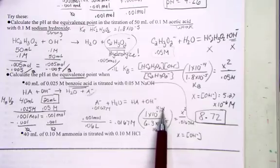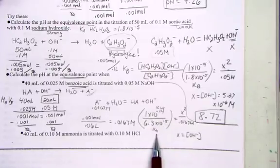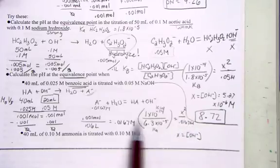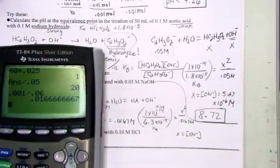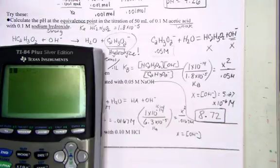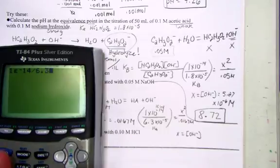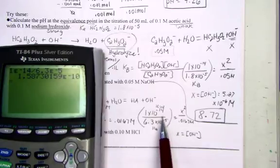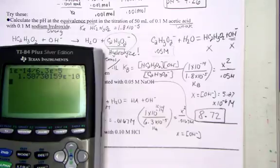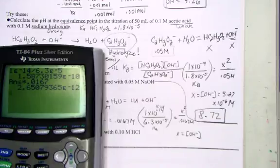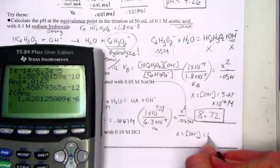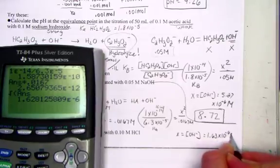We find Kb by taking Kw over Ka, set equal to x squared over the value of 0.0167. Let's hit for the value of x, knowing that that's a base ion. 1e negative 14 divided by 6.3e negative 5. And my Kb value now, 1.59 times 10 to the negative 10th. Cross multiply with 0.0167 molar, and that's x squared. So I take the square root, and we find the value of x to be 1.63 times 10 to the negative 6th molarity units.